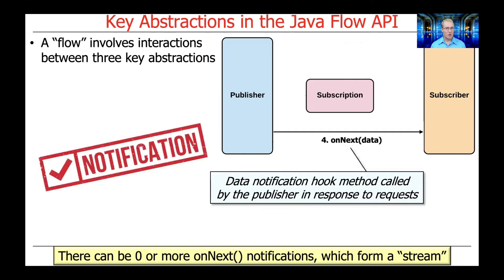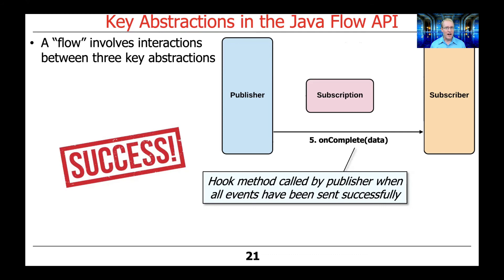Once the publisher and subscriber are connected by this protocol, events can start to flow. The most common type of event, of which there can be zero or more, is the on-next event. This is essentially a data notification hook method that's called by the publisher in response to the request that the subscriber gave — basically a way for the publisher to inform the subscriber that something is here and it should do something with it. When all events have been sent, the publisher will invoke the on-complete method if everything completed successfully.